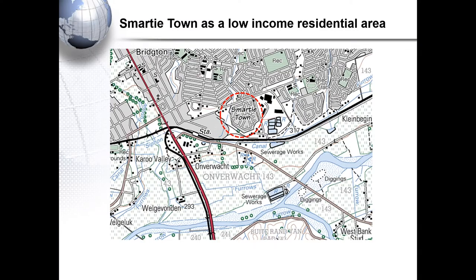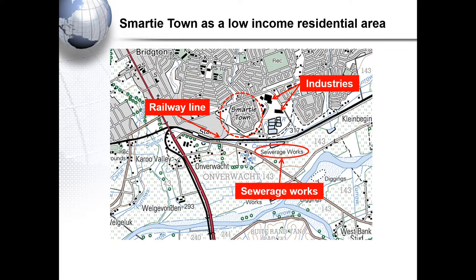You can also identify the different income areas. Will Smarty Town be a low income or high income area? Smarty Town is located right next to industries, next to a railway line, as well as next to sewage works. Therefore, one can argue that Smarty Town is a low-income residential area, as higher-income residents will not be close to sewage works — for the smell — as well as the railway line and industries for noise pollution.